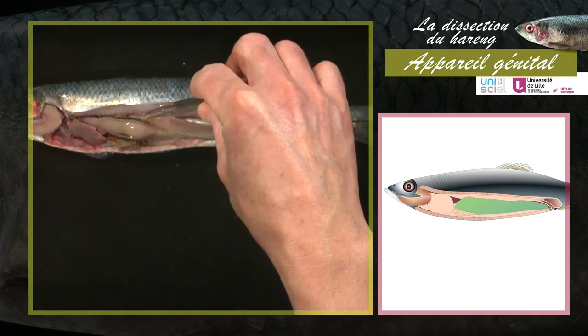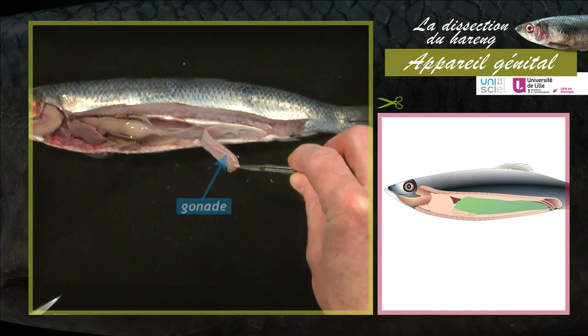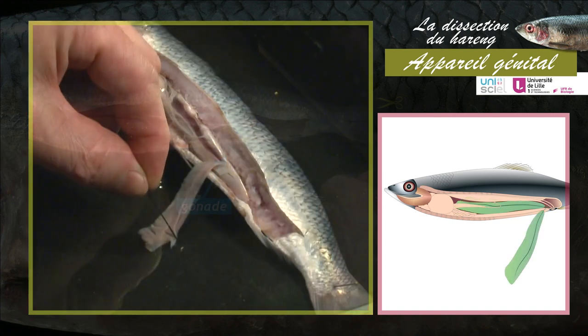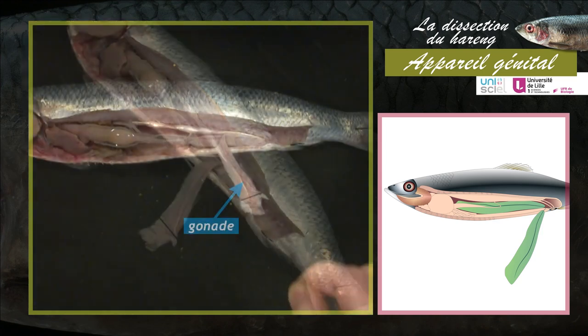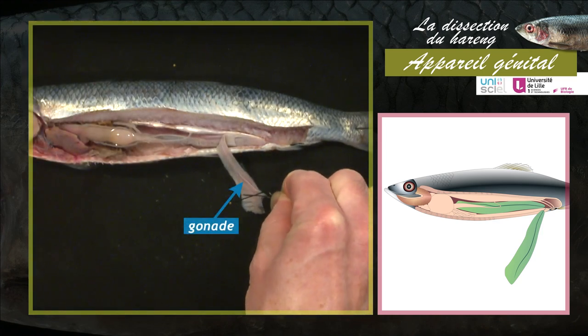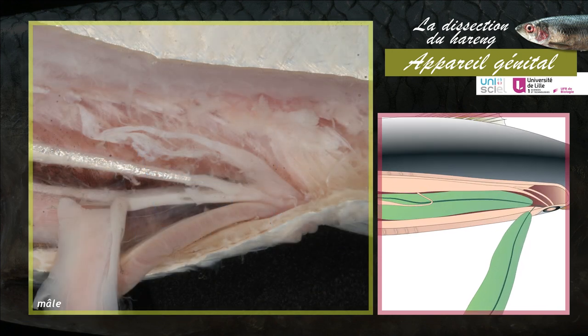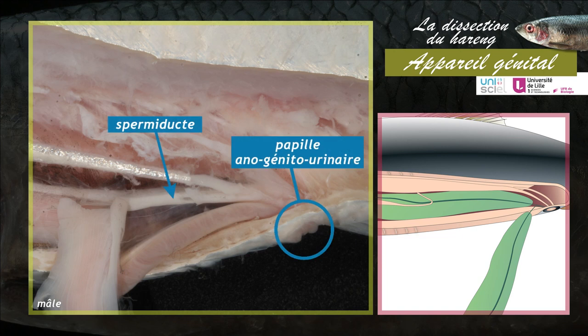Pour l'observation de l'appareil génital, il faut soulever la gonade, la rabattre et la fixer. Les gonades sont longées par des gonoductes : les oviductes chez la femelle et les spermiductes chez le mâle. Les gonoductes fusionnent dans leur partie distale et s'ouvrent au niveau de la papille anogénitourinaire. Les gamètes sont libérées dans l'eau de mer et la fécondation est externe.